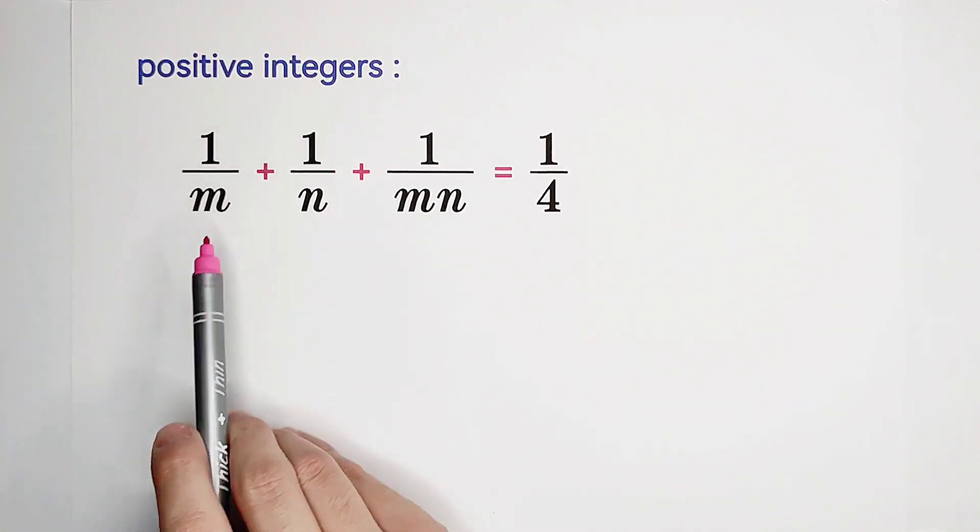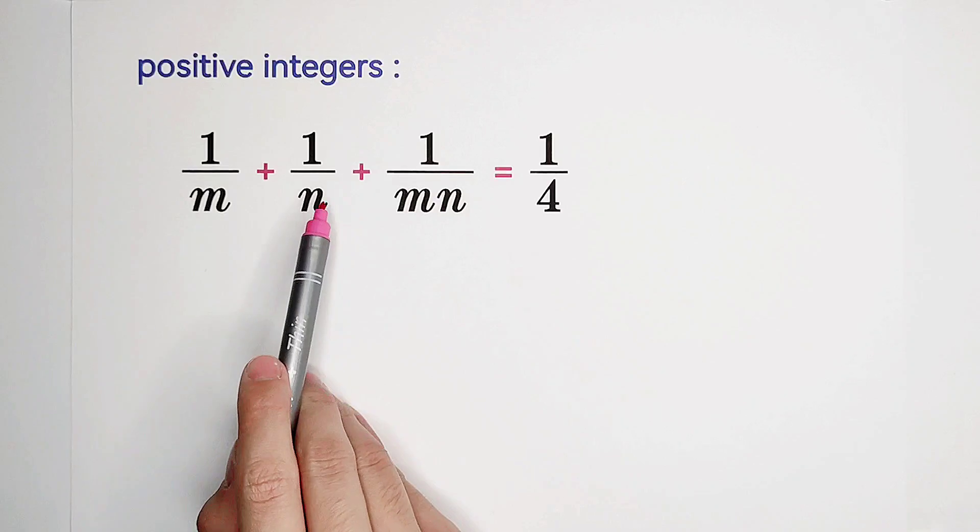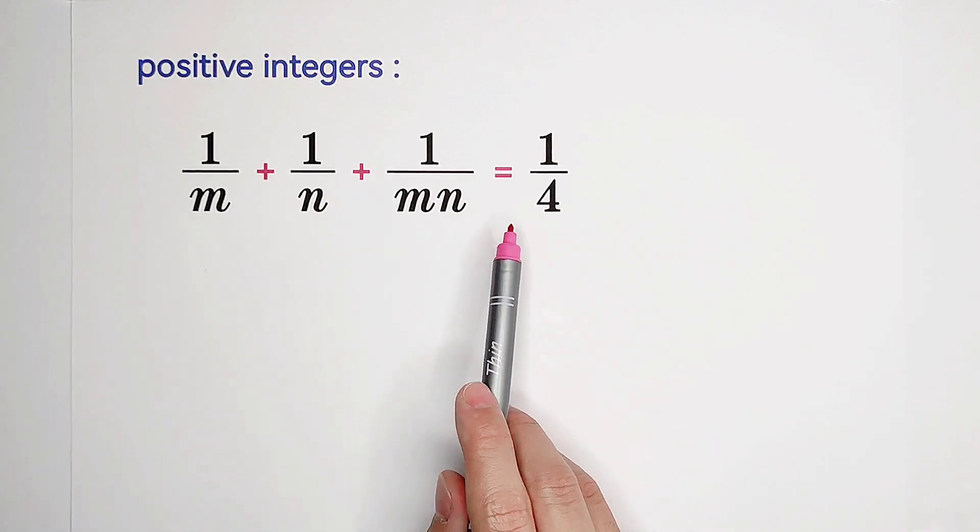Solve for all positive integers m and n satisfying this equation: 1 over m plus 1 over n plus 1 over m times n equals 1 over 4.